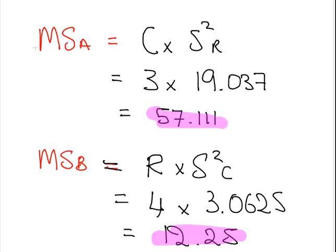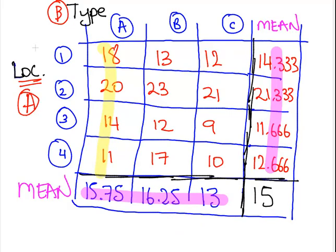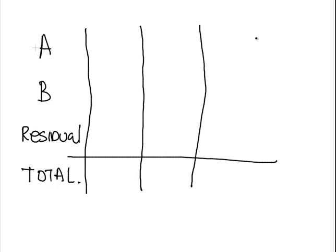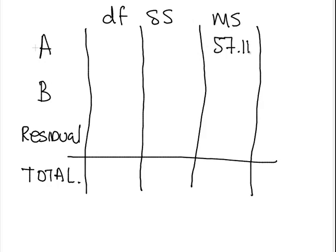So what we're going to do now is set up our table. We're going to have factor A, factor B, the residual or error, and total. If you are familiar with interactions in two-way ANOVA experiments, you might notice that we only have a single replicate there, so there's going to be no interaction term. Now, degrees of freedom. We have degrees of freedom, sums of squares, mean squared. We know this to be 57.111, and we know the mean squared for B to be 12.25. We still have to find out what this is yet, the mean squared for residuals.